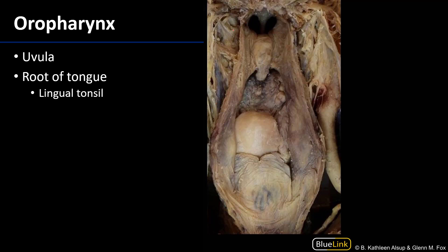The oropharynx will contain — drawing that line again — the uvula, and as we pass through this space beyond this palatopharyngeal fold, which is the posterior boundary for the fossae, we enter into the fossae and can see the root of the tongue with the lingual tonsil.